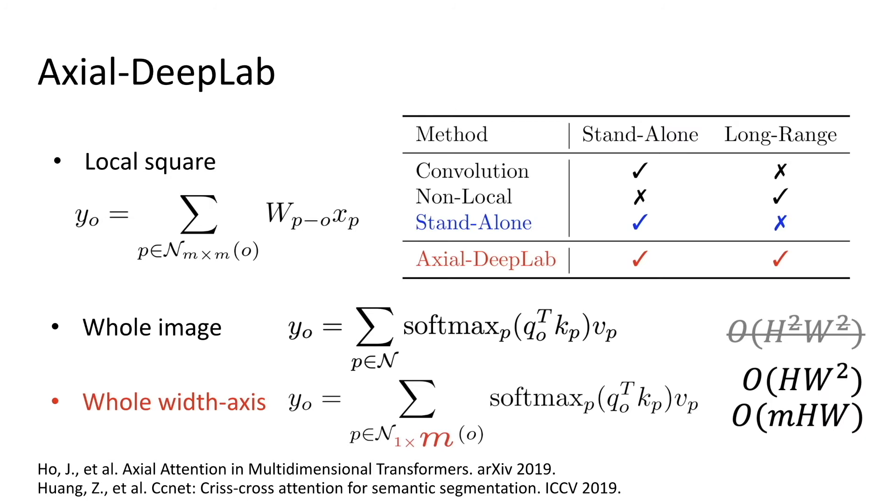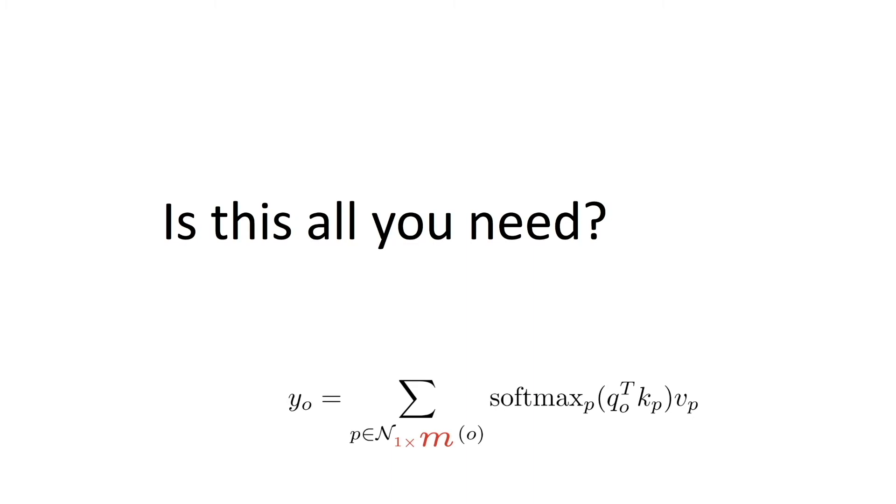Axial attention is more efficient than non-local. One can also optionally impose a local constraint M, when the input is huge. But in practice, we always use a very large M, since it does not introduce much extra cost. We will validate this choice with experiments. Now we ask a question. Is this axial attention all you need to build a good vision model? The answer is no.